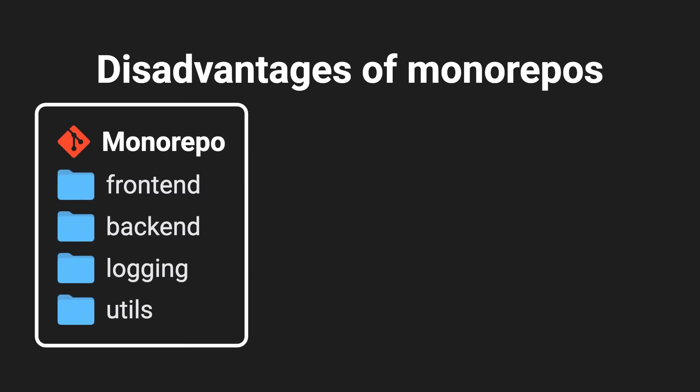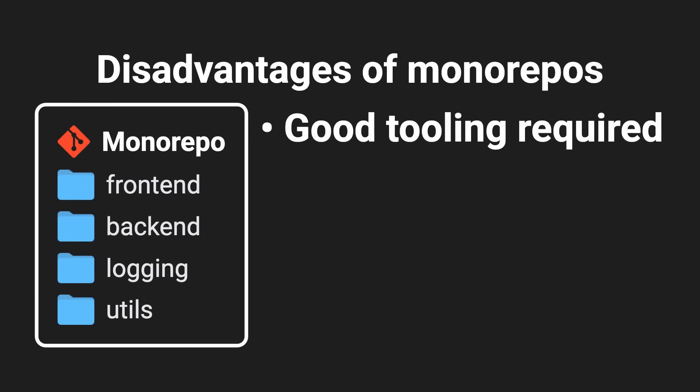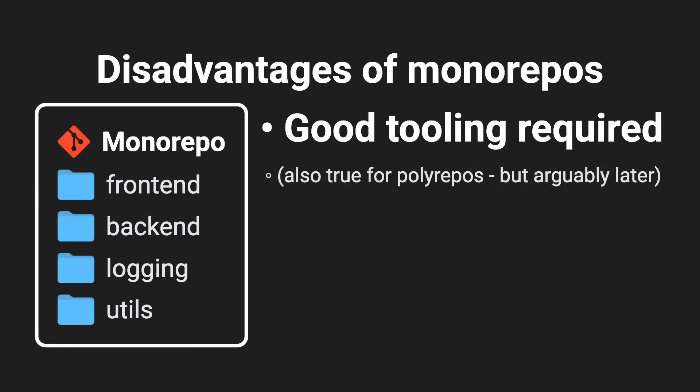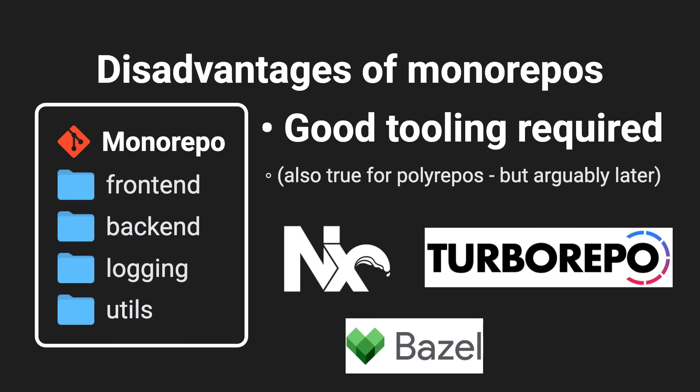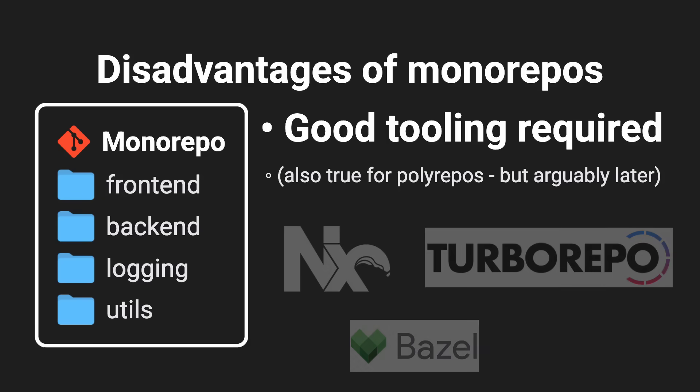Monorepos also have some other disadvantages. Most importantly, good tooling is crucial. I'd argue that after a certain scale this is also true for polyrepos, but with monorepos you'll hit the point where you're forced to invest in tooling much sooner. At the very least, you need a build tool like NX, Turborepo, or Bazel that's specifically designed to handle a monorepo at scale. Otherwise, whenever you push a minor change to any module, your CI will rebuild the entire repo, which would take forever.